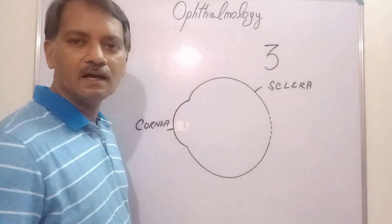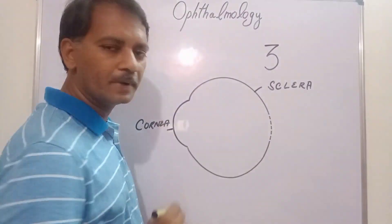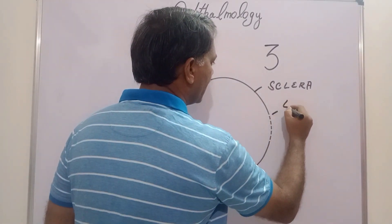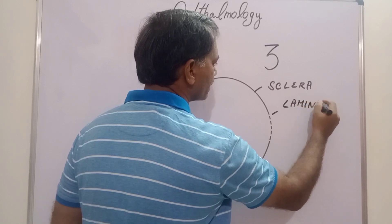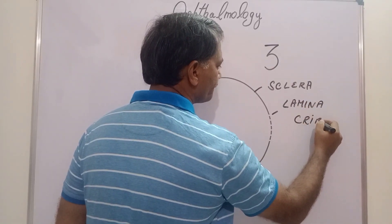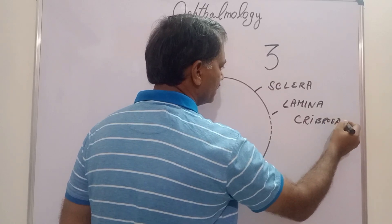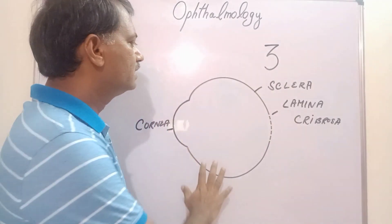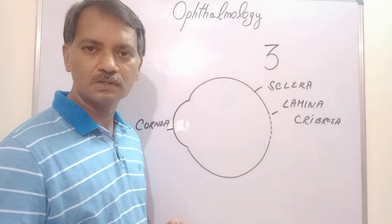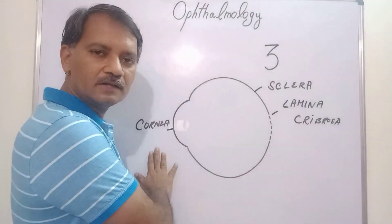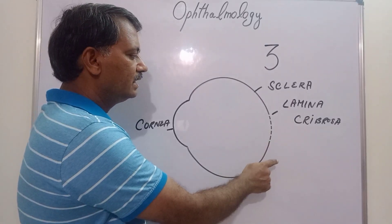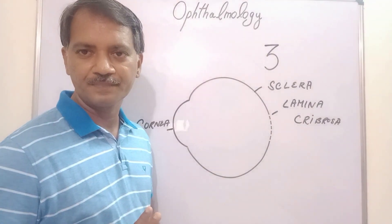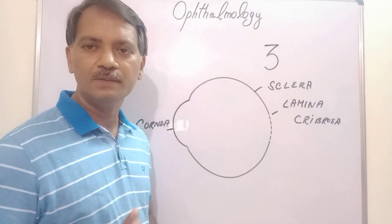In the sclera, posteriorly, you have multiple openings. This portion of the sclera is otherwise called as the lamina cribrosa. So, the outer fibrous coat has three parts: the cornea in front, the sclera behind, and within the sclera posteriorly the lamina cribrosa, which has multiple openings.